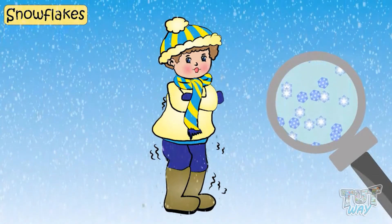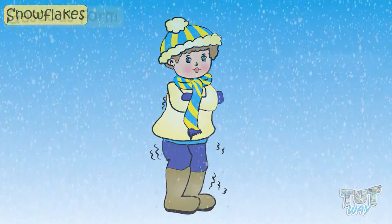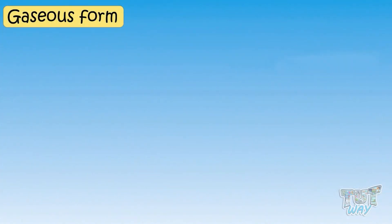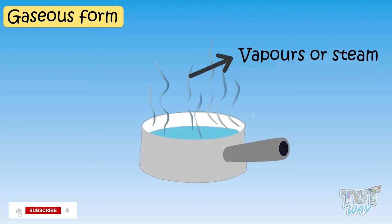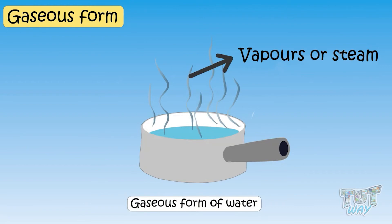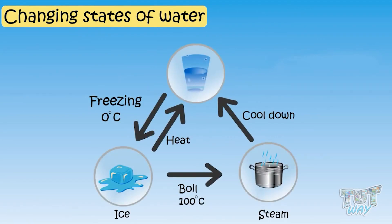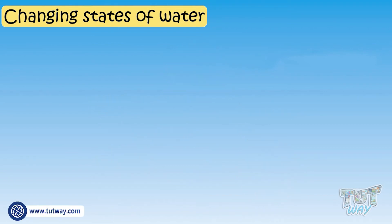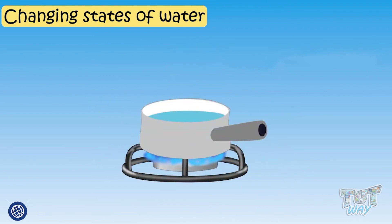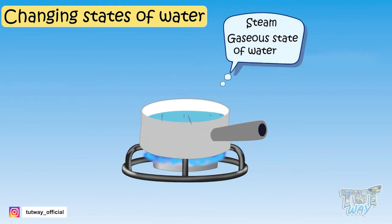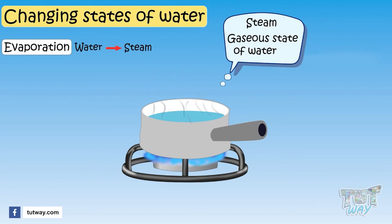Now let's learn another form of water — the gaseous form of water. Water in the form of steam or vapors is the gaseous form of water. When we heat water, some of the water changes into a gaseous state called steam, and this change from the liquid state of water to the gaseous state is called evaporation.